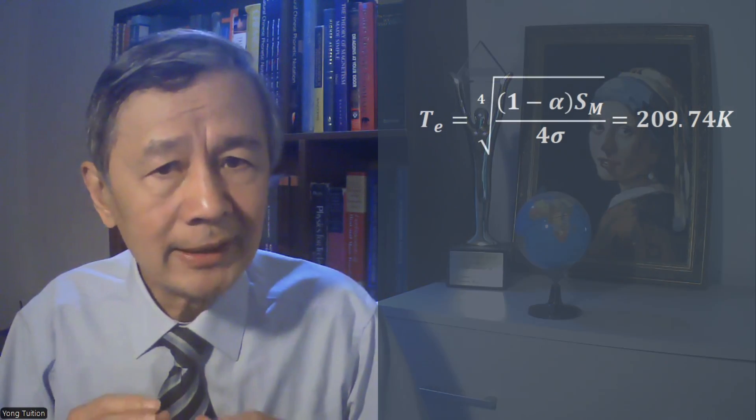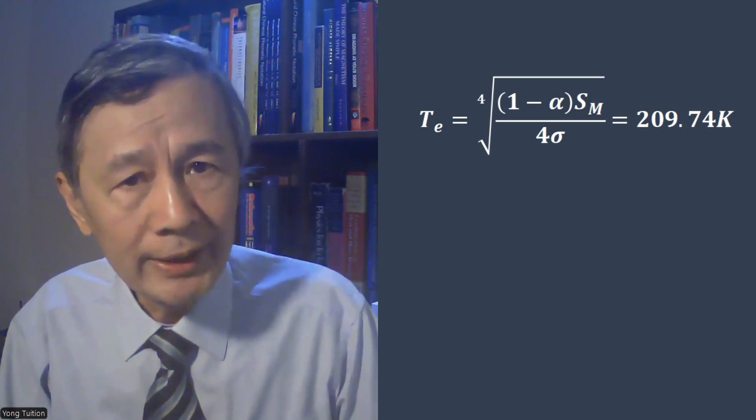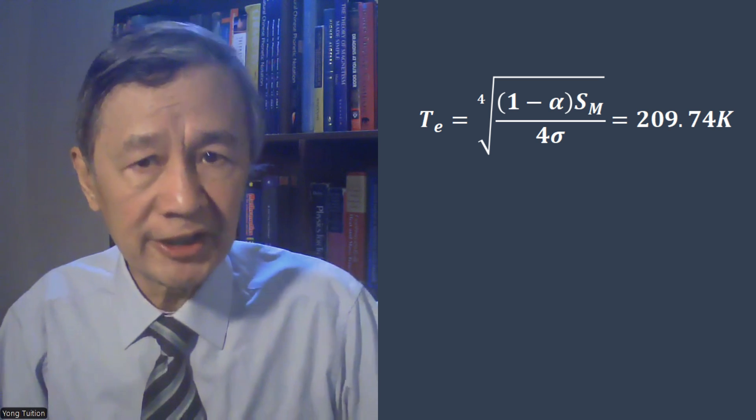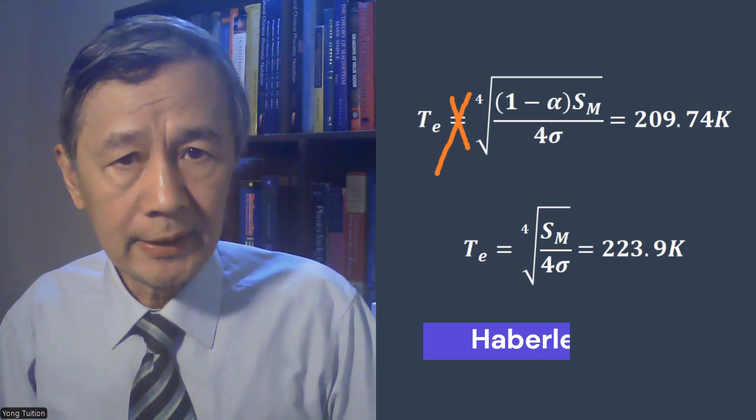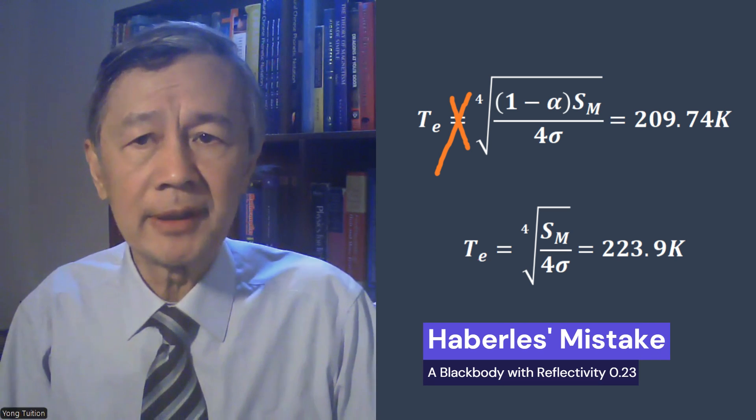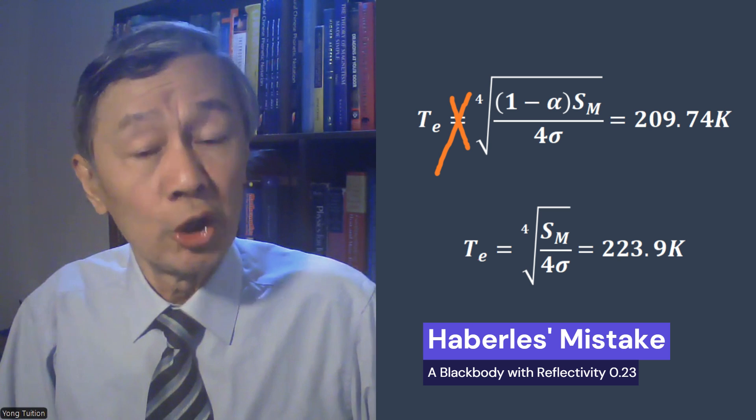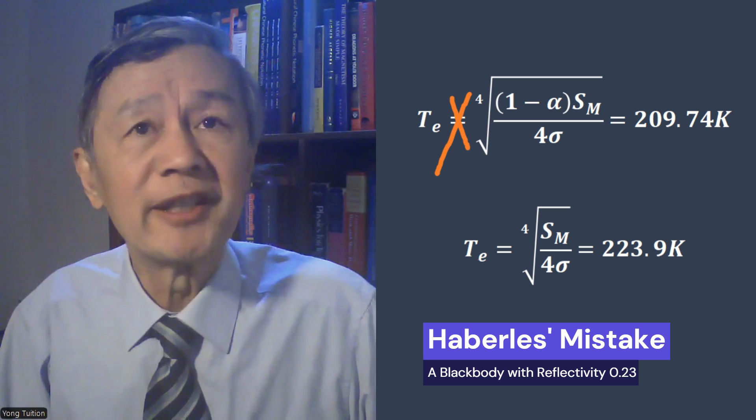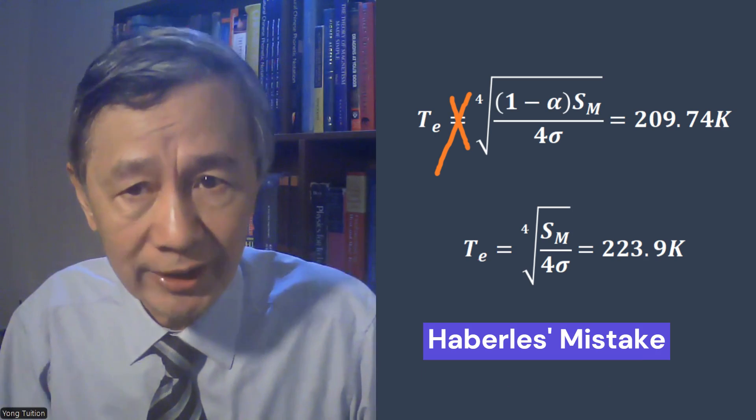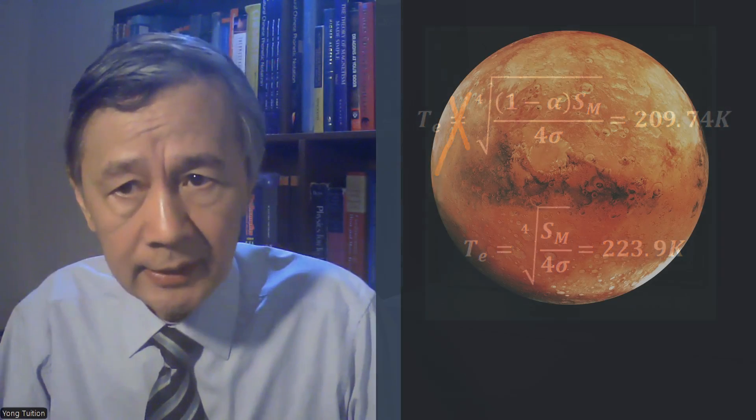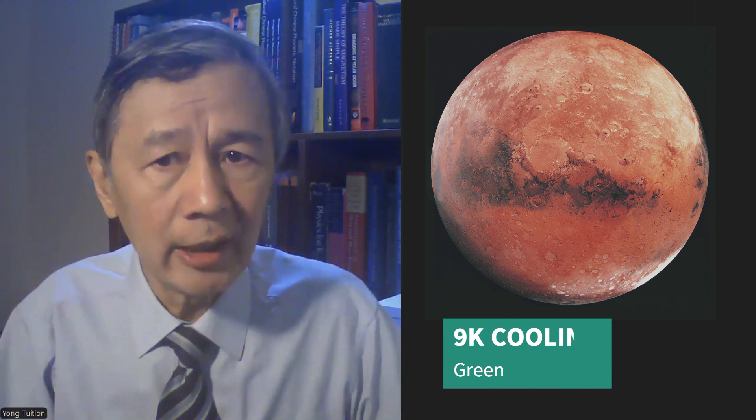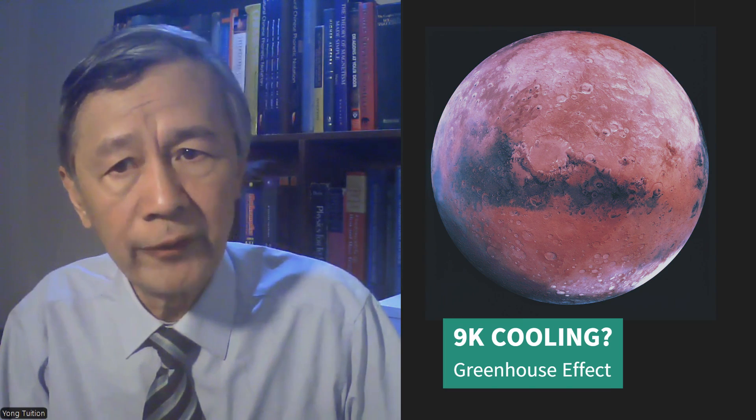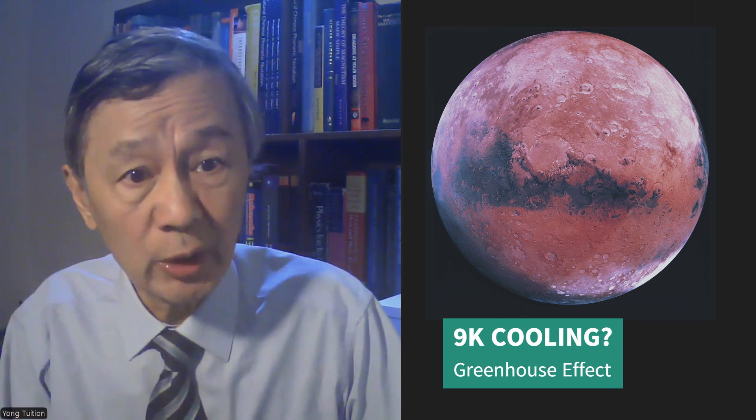However, as I have found out, Haberle made the same conceptual mistake as Orens et al. did over 60 years ago. As I discussed earlier, the correct emission temperature of Mars in the absence of any greenhouse gases should be 223 Kelvin rather than 209 Kelvin. This implies the greenhouse effect is negative 9K or 214 minus 223.